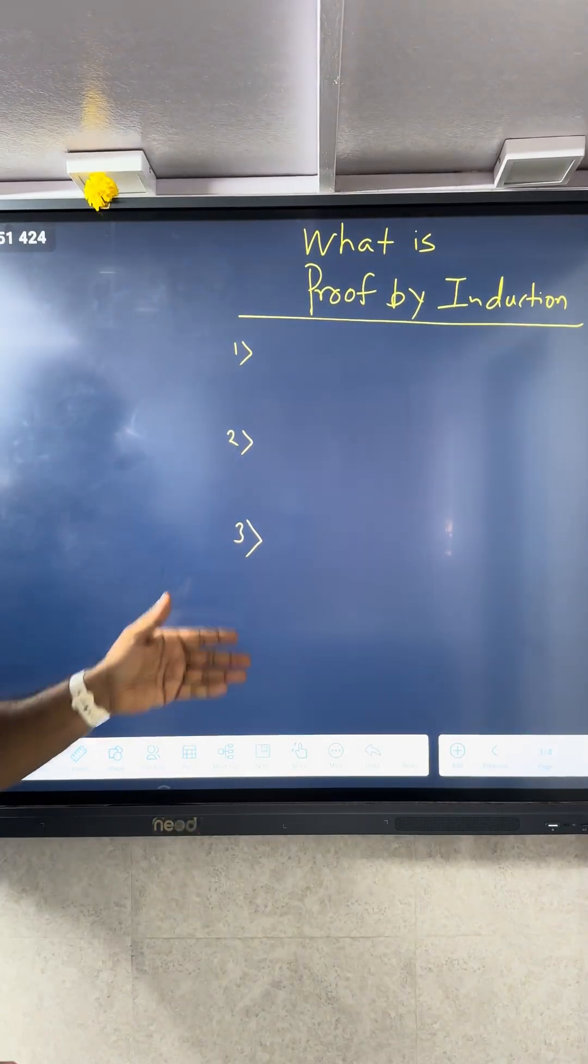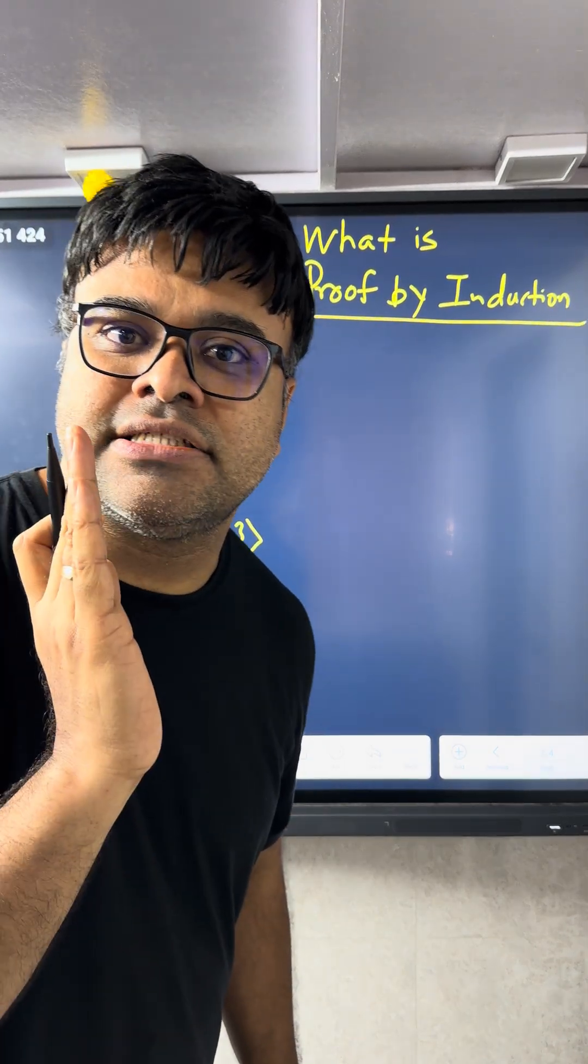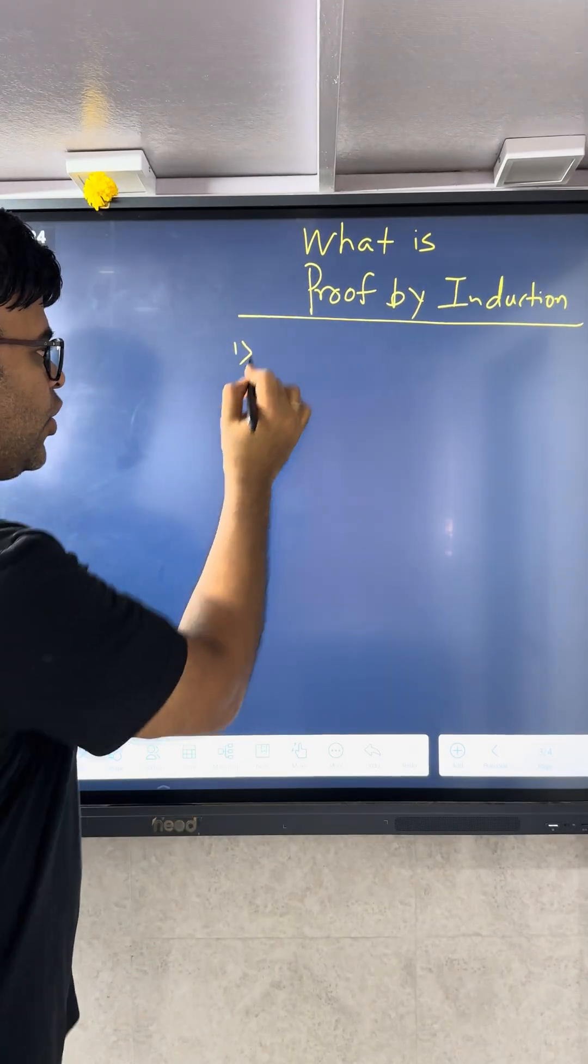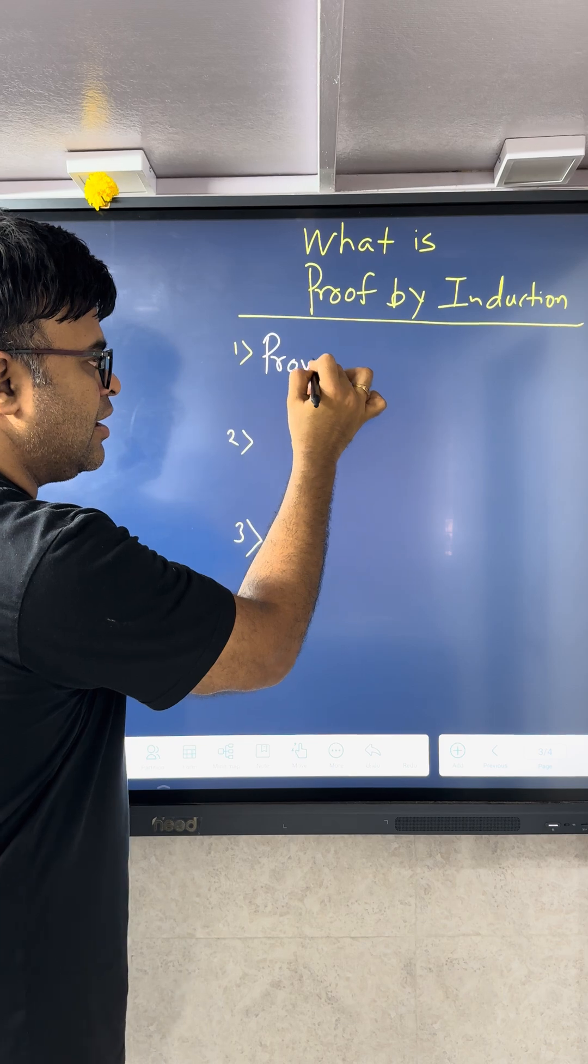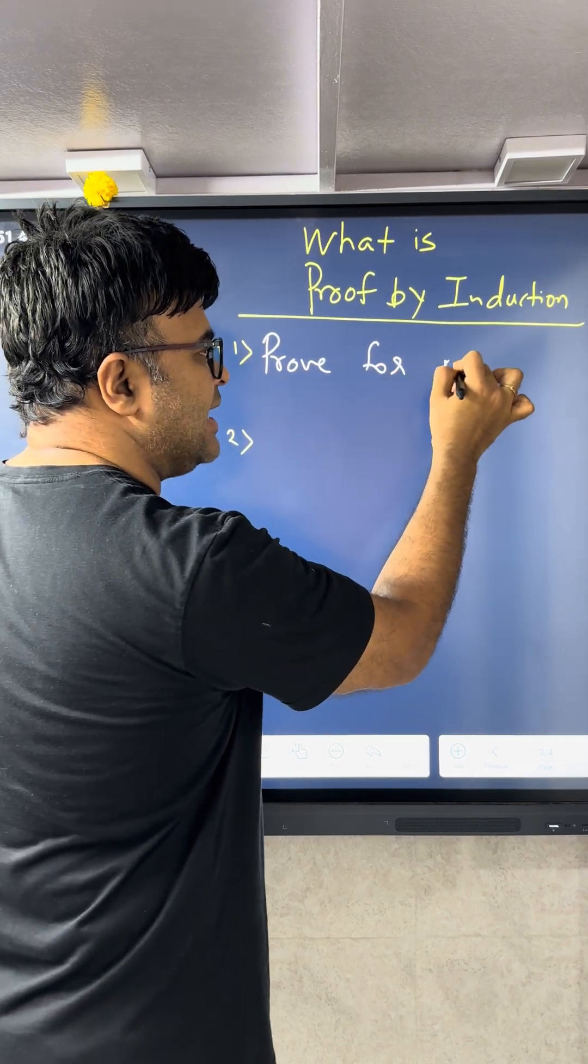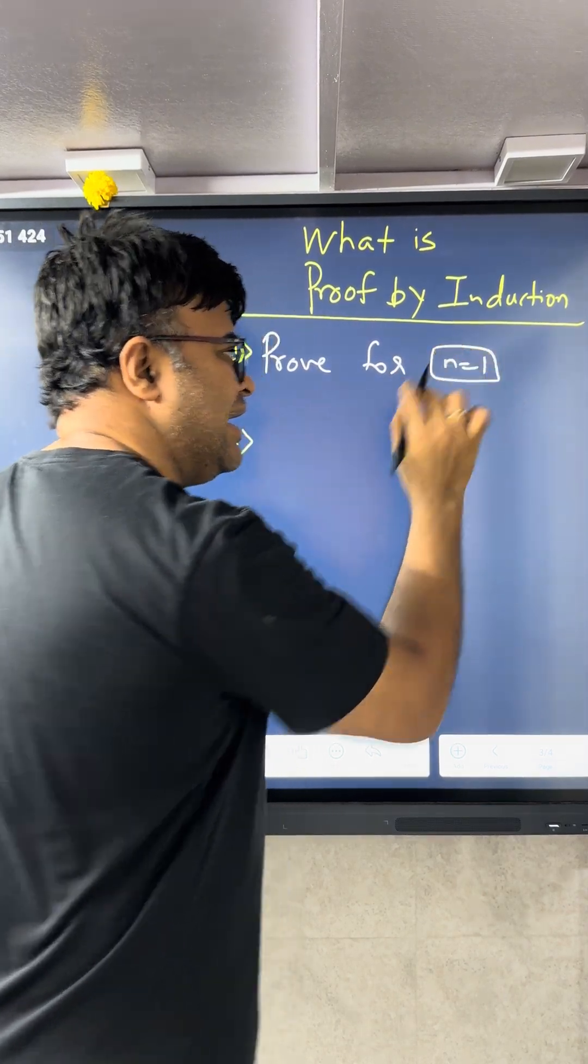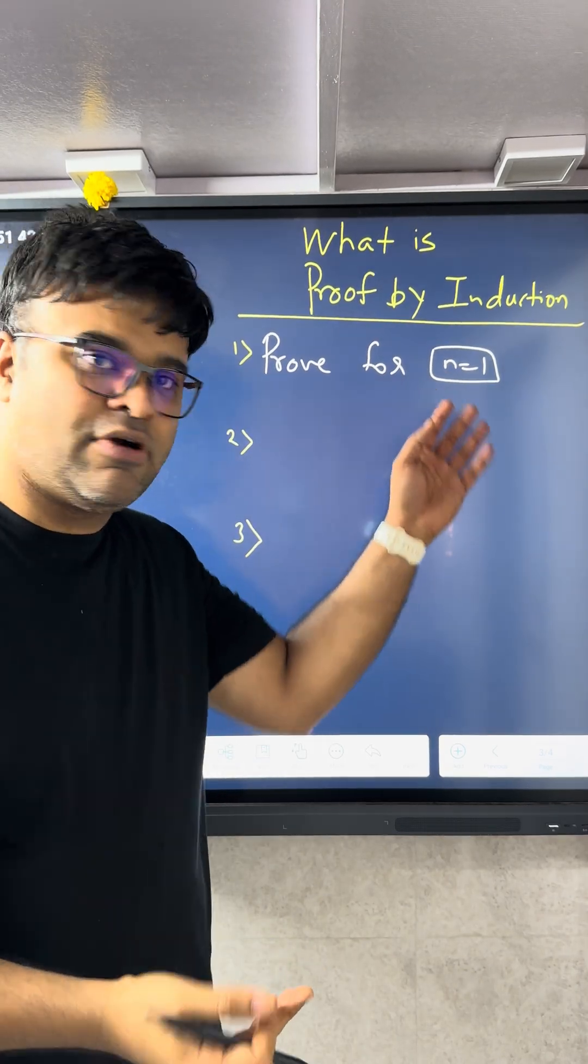Step one is testing the waters. Check with the initial condition, so prove for n is equal to 1 if your starting point is 1. If your starting point is 2, then n equal to 2. Initial condition testing, we prove this.